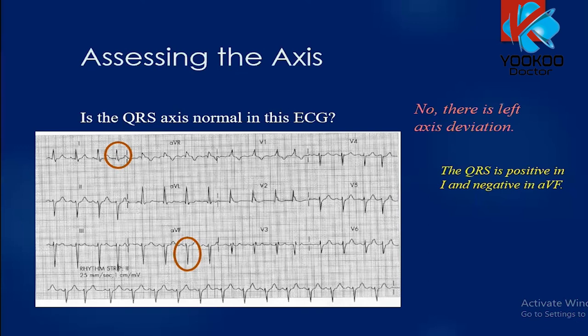Looking at an example ECG for axis: lead 1 shows a positive deflection, and AVF shows a negative deflection — so this is a left axis deviation.